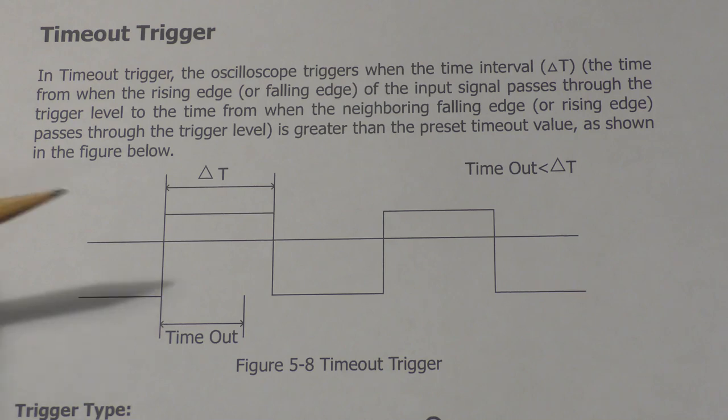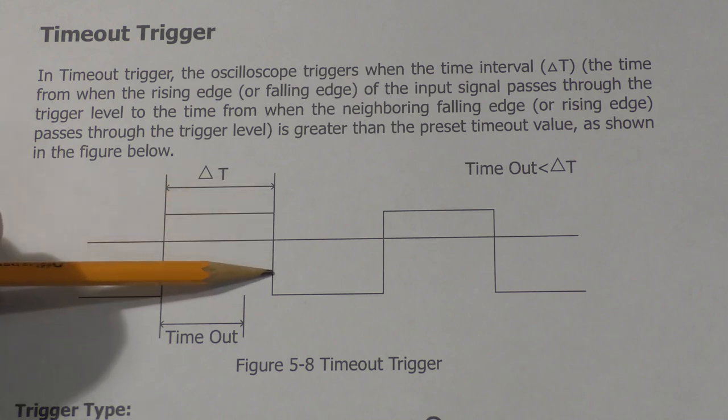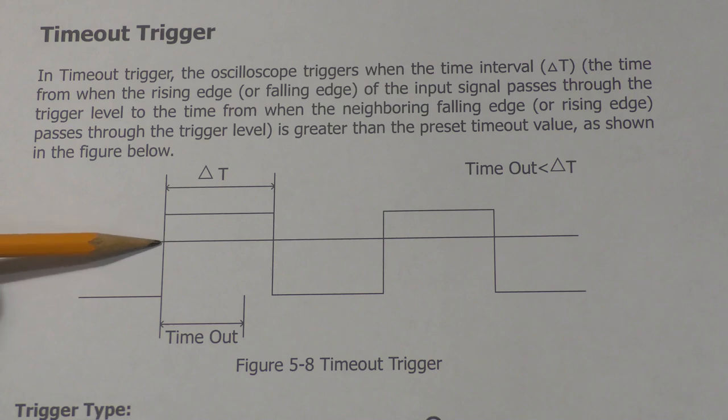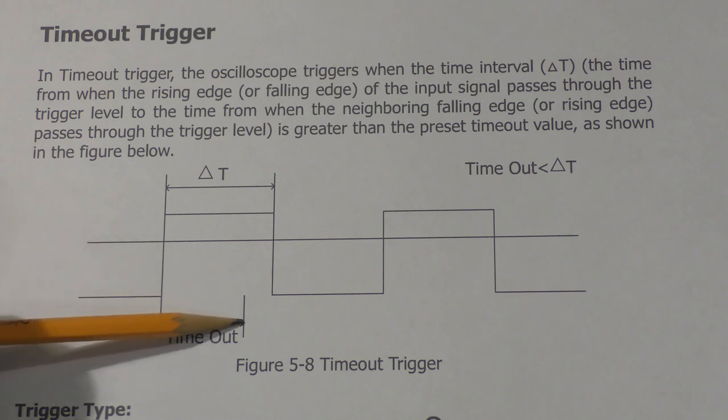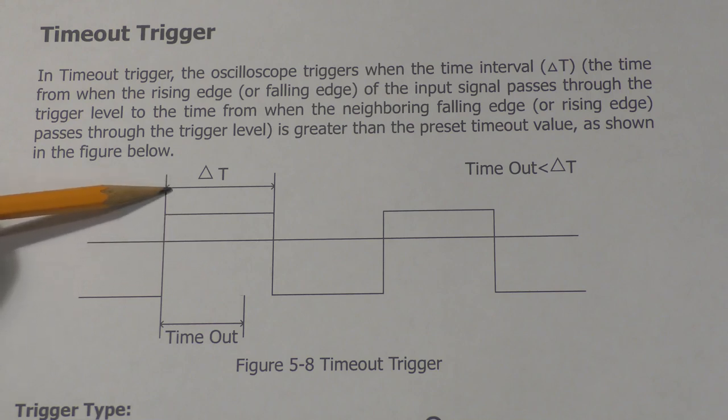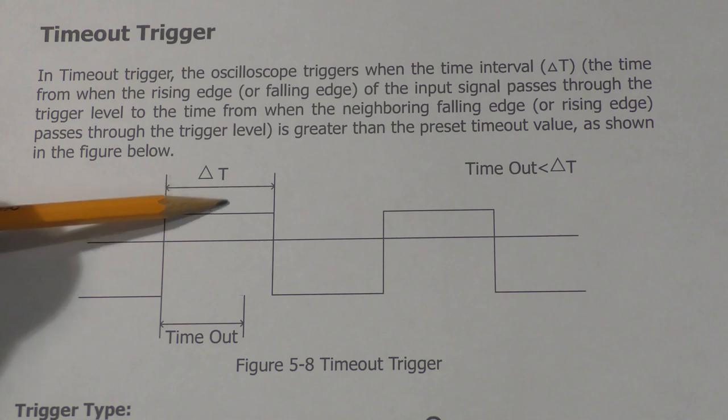If you're looking for the duration of the signal on a single channel, not a pattern, you can use the timeout trigger. What the timeout trigger does is it senses—this is the trigger level—it senses when the waveform goes through the trigger in one direction and when it comes back through the trigger in the other direction, and it compares that to a time you have set.